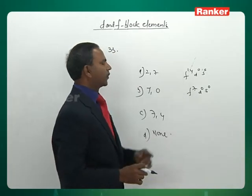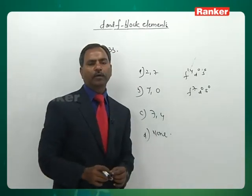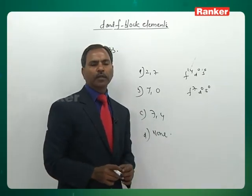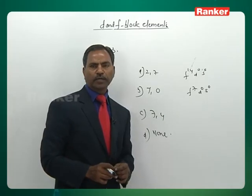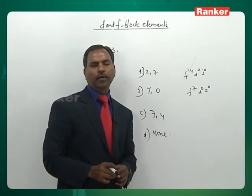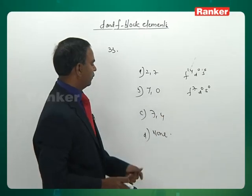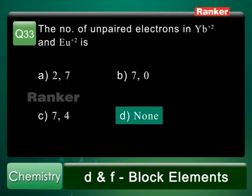In the case of Yb²⁺ with 4f¹⁴ configuration, there are no unpaired electrons. For 7 unpaired electrons, the answer should be 0 and 7 — but the option given is 7, 0. Therefore, since option B gives 7 and 0, the answer D is correct for question 33.